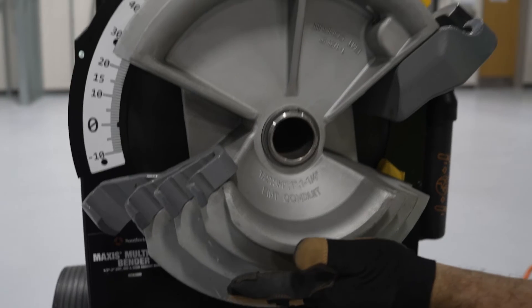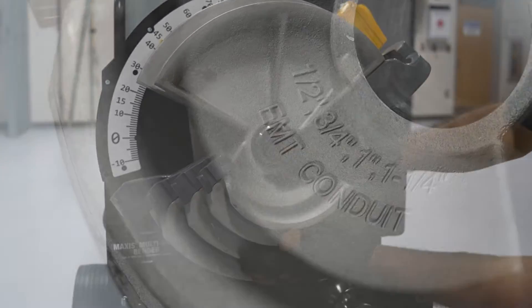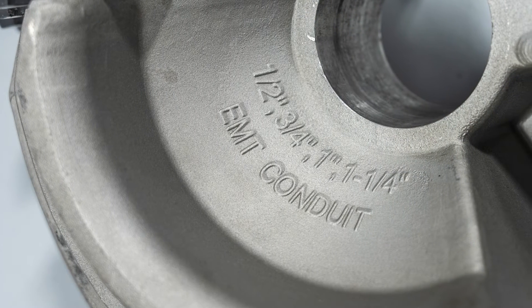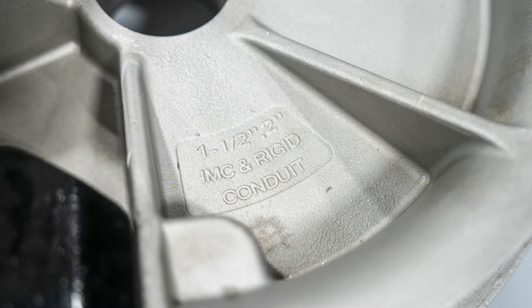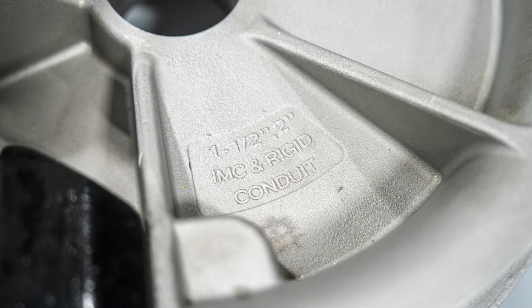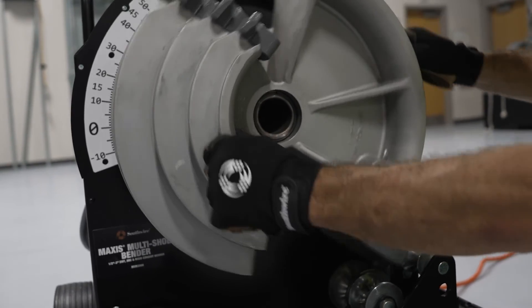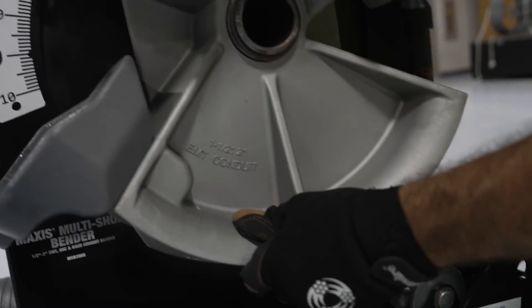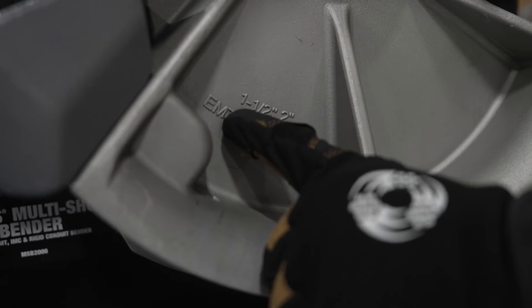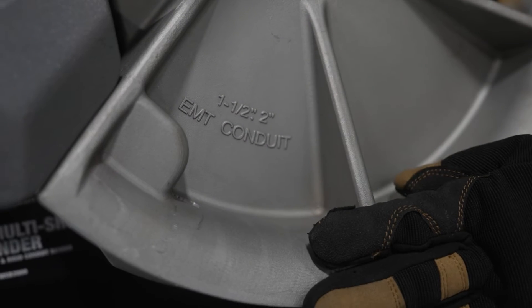Notice that the bending shoe is separated into two halves. One half of the shoe is used for bending half-inch, three-quarter, one, and one and a quarter inch conduit. The other half of the shoe is used for bending inch and a half and two-inch conduit. You can also see markings that are cast into the center of the shoe indicating the conduit size for each half. Today we're going to be bending two-inch EMT conduit, so I'll be using this half of the bending shoe.